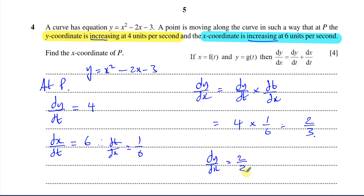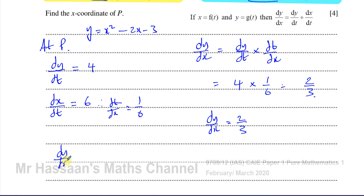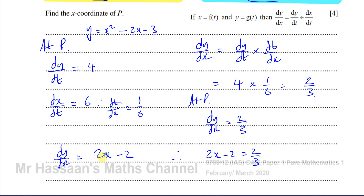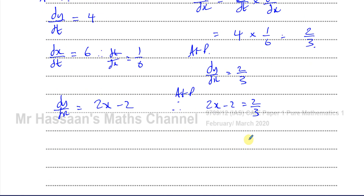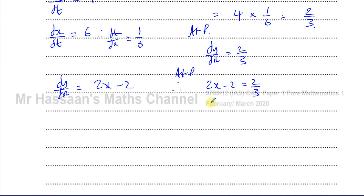Since we know what y is, we can also find dy/dx in terms of x. Differentiating the curve equation y = x squared minus 2x minus 3 gives dy/dx = 2x minus 2. We know dy/dx equals 2 thirds, so at point P: 2x minus 2 equals 2 thirds. Multiplying through by 3 gives 6x minus 6 equals 2, so 6x equals 8, therefore x equals 4 over 3.